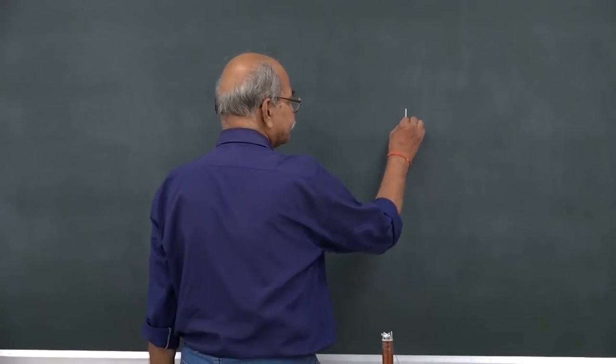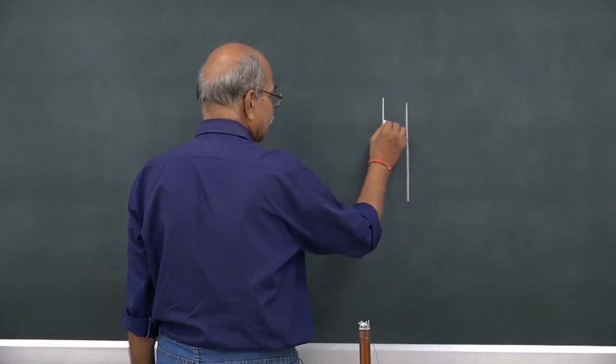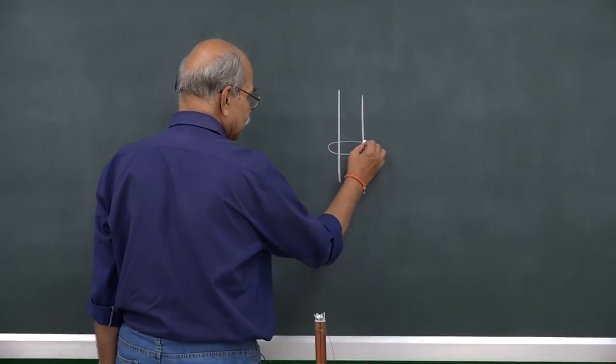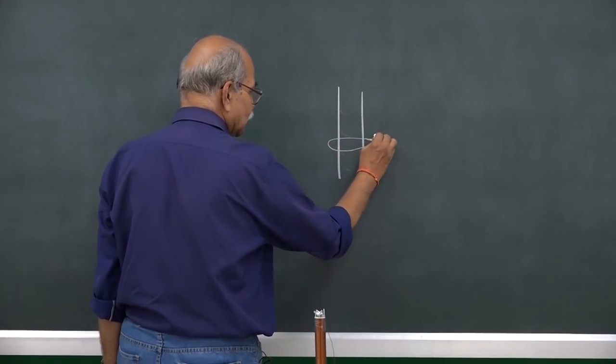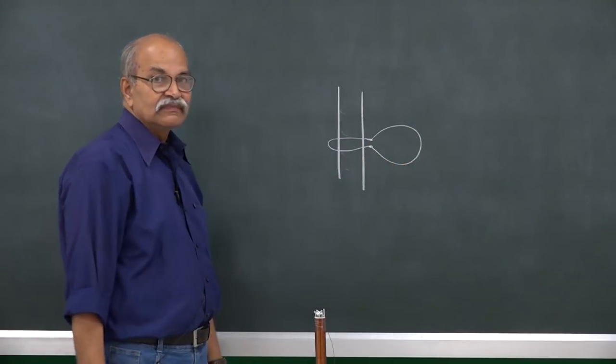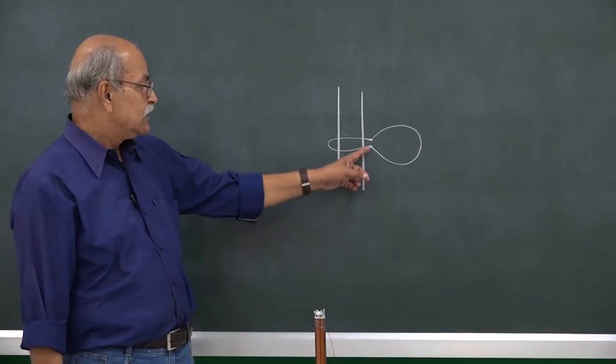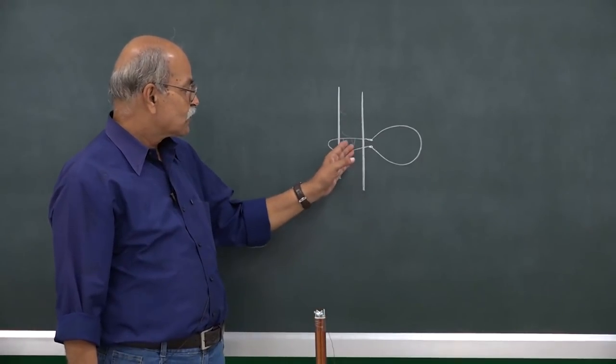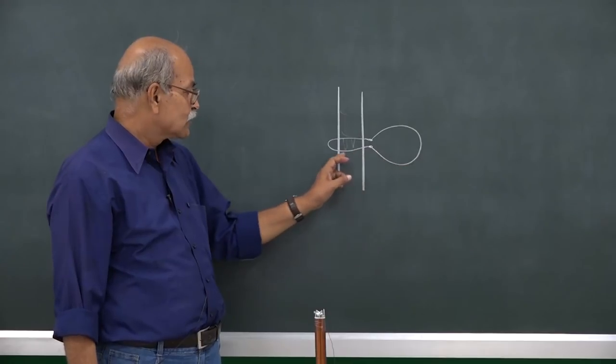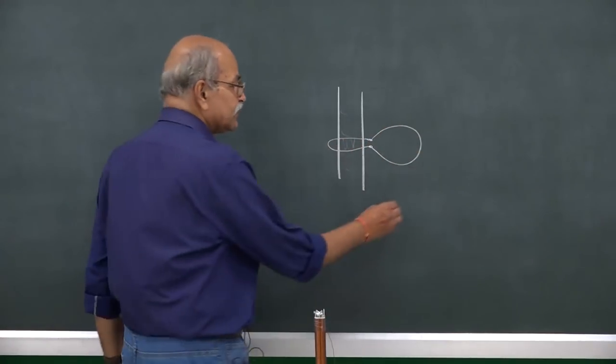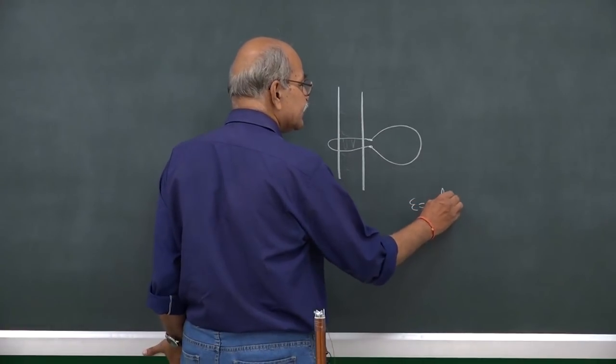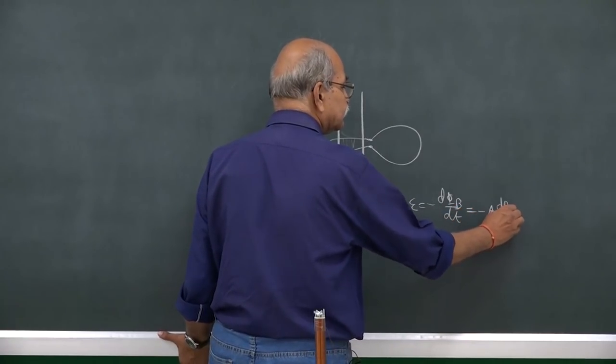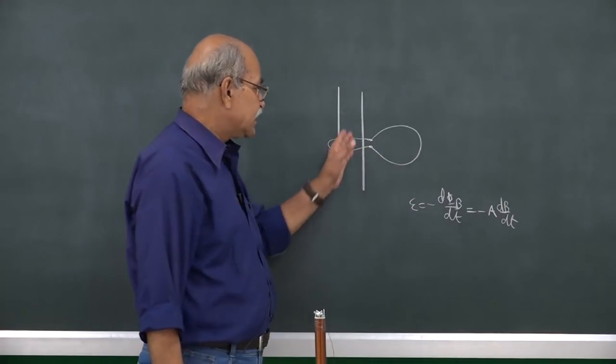If you have this solenoid here and you have current in the solenoid and an open loop here, and then you connect this loop this way, the magnetic field is changing in this area. If I take this as a loop on the other side, the whole area closed loop, then you have an EMF which is minus dΦ/dt or minus area times dB/dt. dB/dt is because of the changing current in this solenoid.